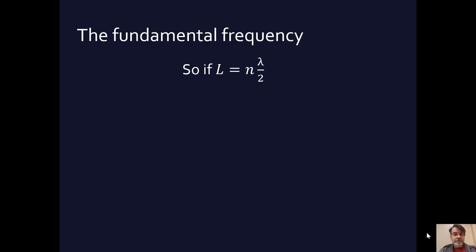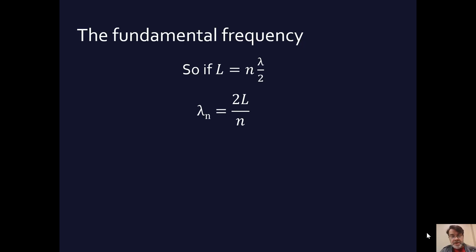There's something we call the fundamental frequency — the basement of the frequency. We've said that the length of the string is going to be some multiple N of lambda over 2, where N is one, two, three, four, five... So in general, we can say the wavelength for any multiple N is going to be twice the length divided by N — simple algebra, giving us lambda equals 2L over N.